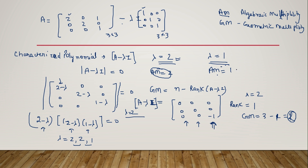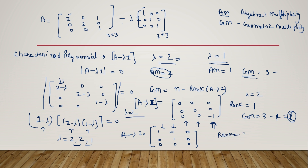We have algebraic multiplicity as one for lambda equals one. Now let's find geometric multiplicity. Order is three. Substituting lambda equals one into A minus lambda I gives: [1, 0, 0], [0, 1, 0], [1, 0, 0]. Two rows have non-zero elements, so rank is two. Geometric multiplicity equals three minus two, which is one — equal to algebraic multiplicity. Hence the matrix is diagonalizable.